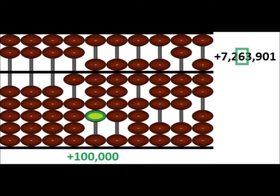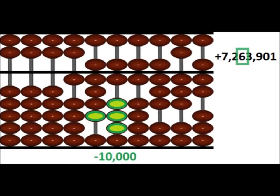For the tens thousands column, there isn't enough beads to add 6, so we push up 1 earth bead in the hundreds thousands column, and push down 4 earth beads in the tens thousands column. This will give us 6.